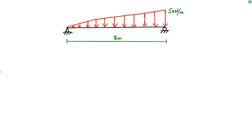Hello guys, welcome back to the civil engineering YouTube channel. Please subscribe to our channel for daily civil engineering videos. In today's lecture we are going to analyze a simply supported beam with a uniformly varying load. We see here that there is a triangular load acting on this beam, which increases from 0 kN/m to 5 kN/m. The length of this beam is 8 meters. Let's consider this is support A and this is support B.